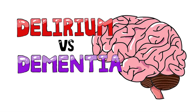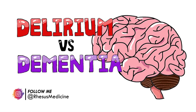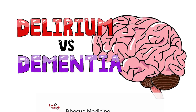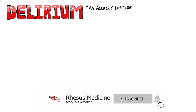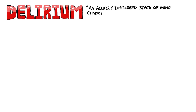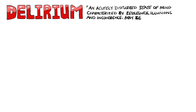In this video, we're going to be talking about the differences between dementia and delirium. First of all, delirium is defined as an acutely disturbed state of mind, characterised by restlessness, illusions and incoherence. Bear in mind though, that this can be associated with hyperactivity as well as hypoactivity.